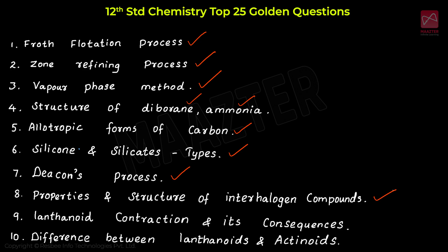In Unit 4, transition and inner transition elements: lanthanide contraction and its consequences, and the difference between lanthanides and actinoids. These 2 questions are very important from Unit 4.